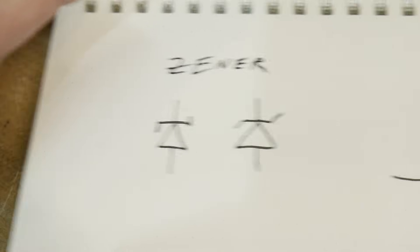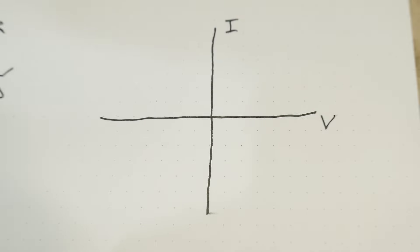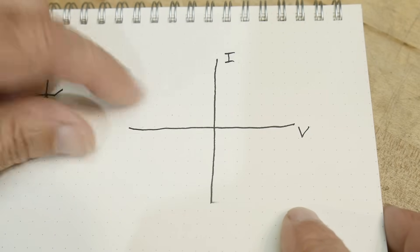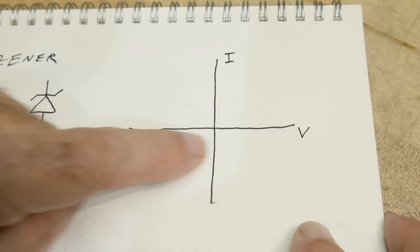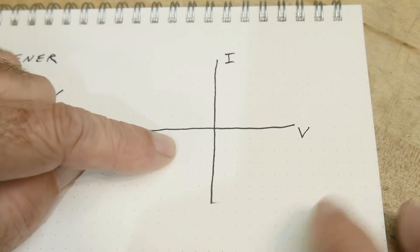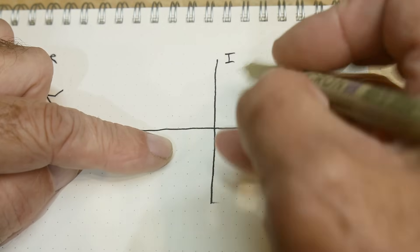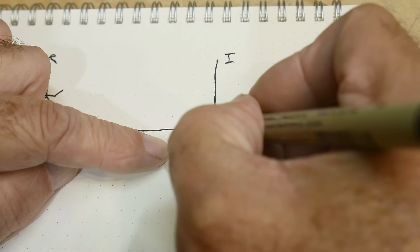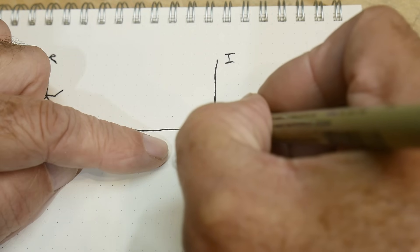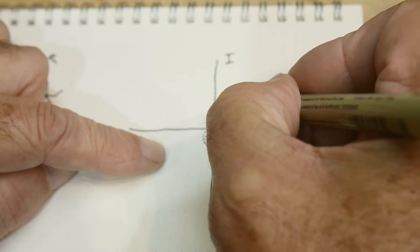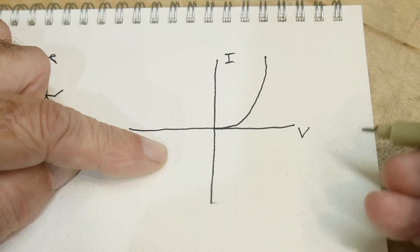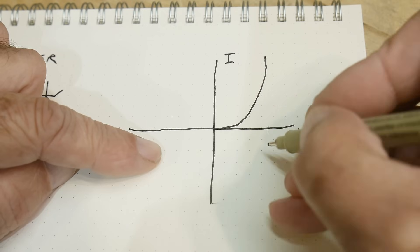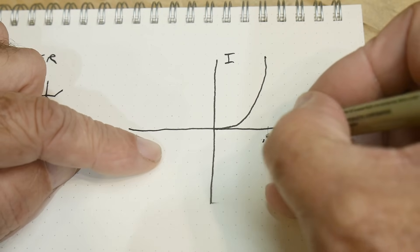So what is the claim to fame of a Zener diode? We're going to draw a curve graphing voltage versus current. For a normal diode, if you start increasing the voltage or current, you get a curve that looks something like this. For a silicon diode, this is somewhere around 0.7 volts.